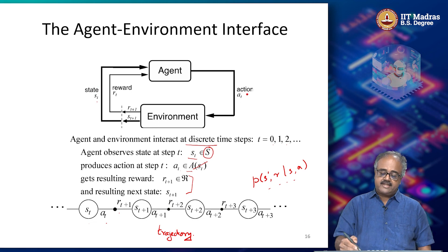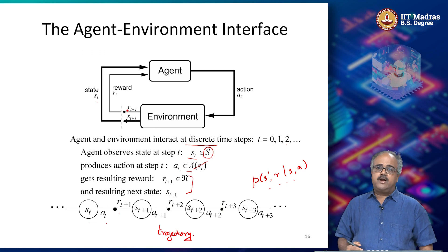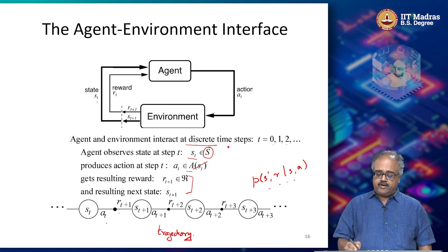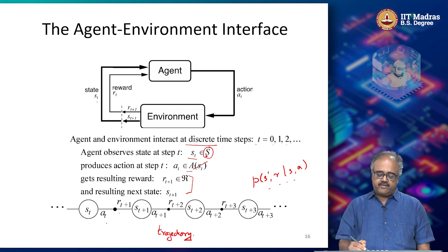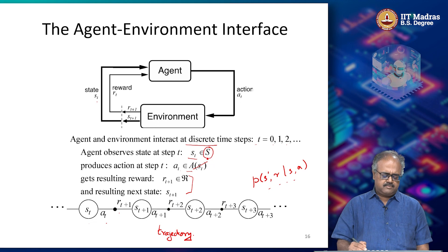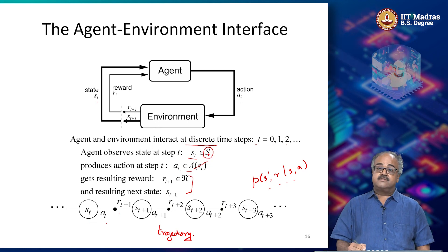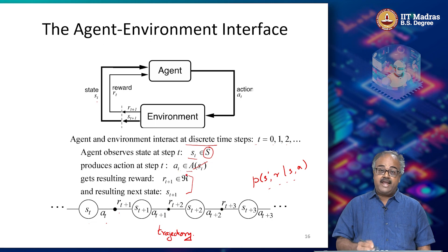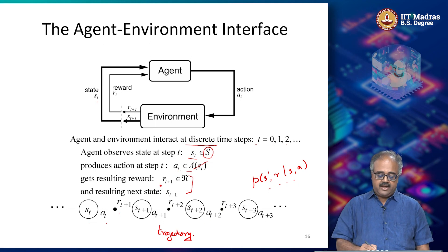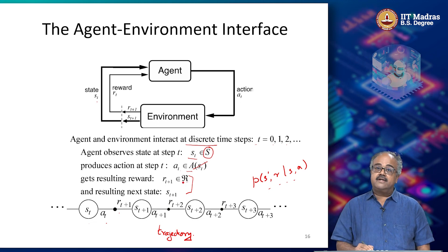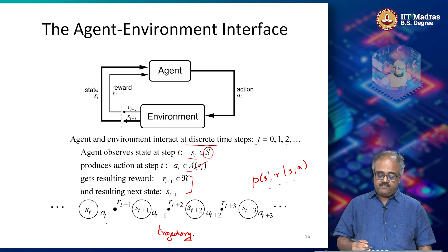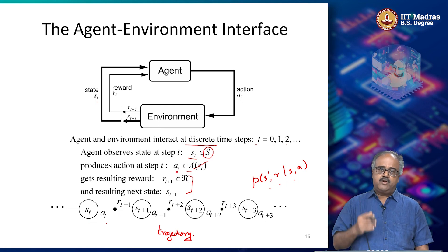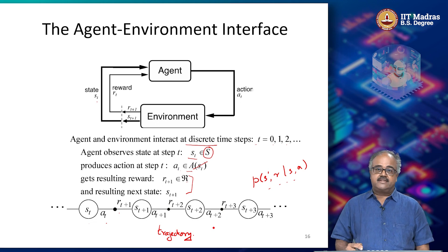The agent senses state S_t, takes action A_t, goes to state S_{t+1} and generates reward R_{t+1}, and this keeps continuing, generating a trajectory through the set of states. We assume the interaction happens in discrete time steps, the state space is discrete given by set S, and A_t comes from a finite discrete set of actions A. The reward R_{t+1} is typically a real-valued scalar, and the next state S_{t+1} also comes from capital S. When I say S_t and A_t, I am talking about random variables, not specific actions or states.